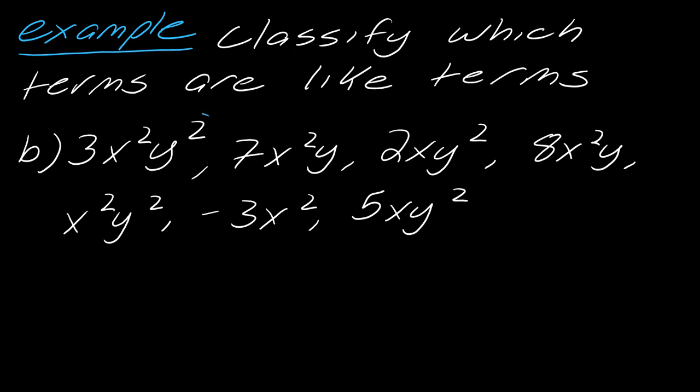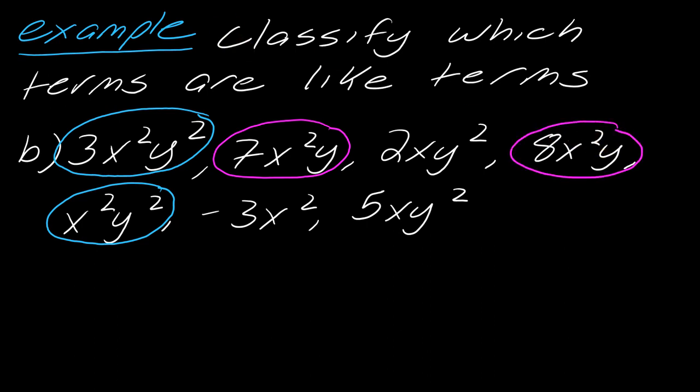Starting here with x²y². Notice I don't really pay attention to the number in front, I'm literally just looking at x²y². So as I scan through this, here's my other x²y², so here is the other like term. Now 7x²y, as I scan through this here's another x²y, so here's x²y.